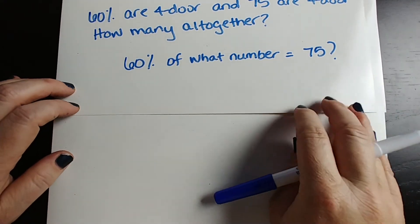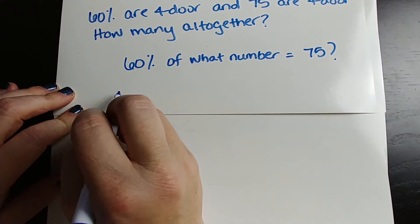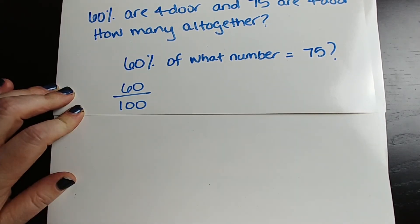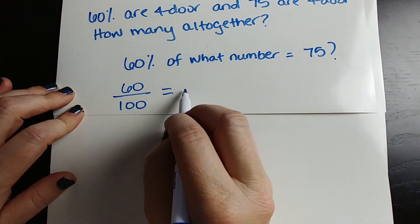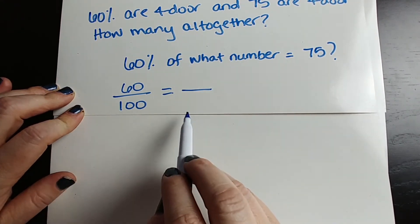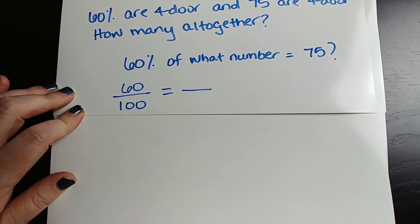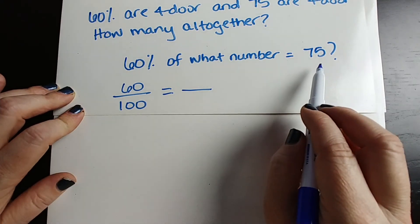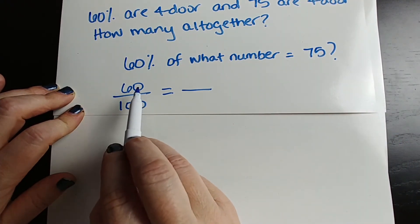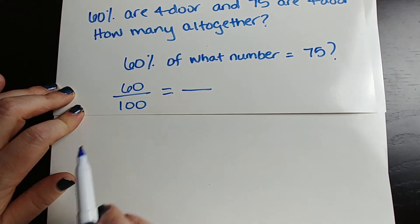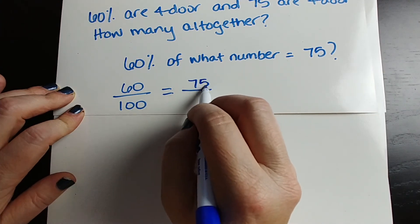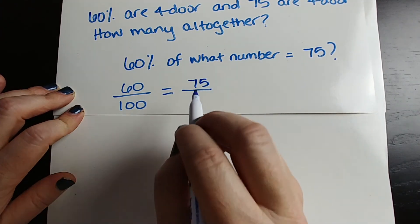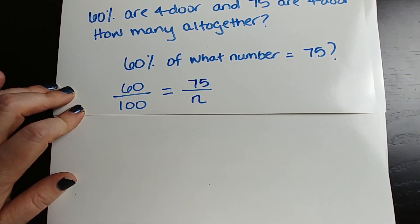We're going to set up a proportion. 60% means 60 for every 100 cars. The big question is: do I put 75 on top or on the bottom? Think about it — in our percentage, 100 is the total, and 60 out of every 100 cars. So 75 is not the total; we have 75 out of what total. Think about which is your total and which is the number that you have.